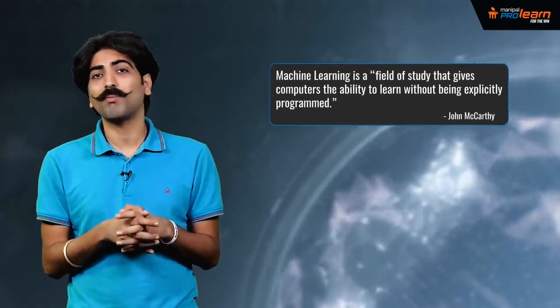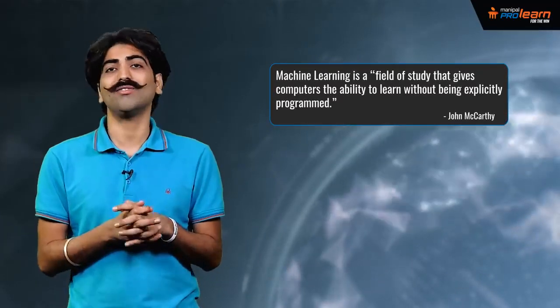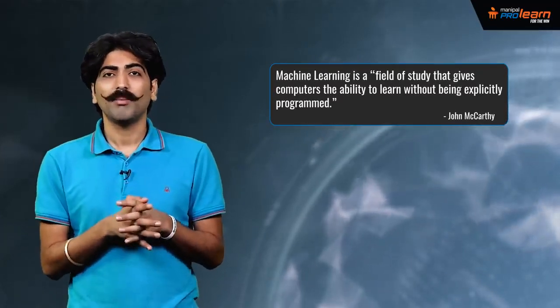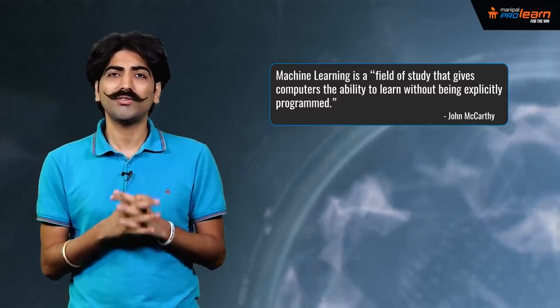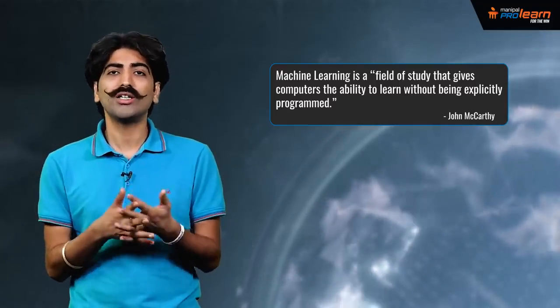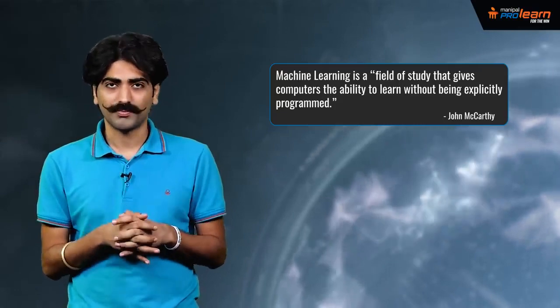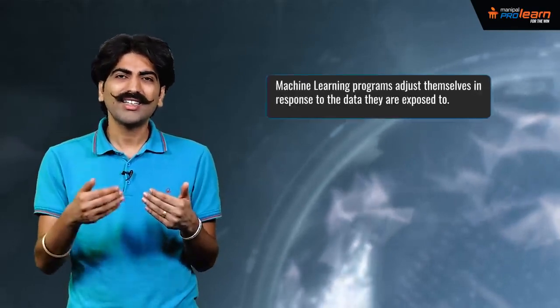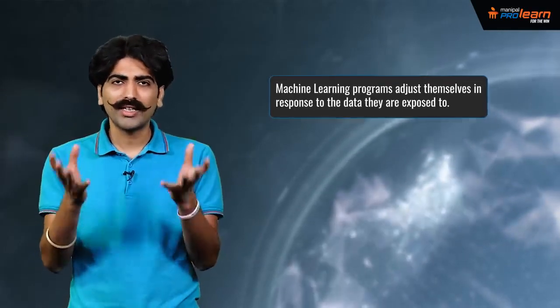Arthur Samuel, again one of the pioneers of the machine learning field, in 1959 defined machine learning is a field of study that gives computers the ability to learn without being explicitly programmed. That means, machine learning programs have not been explicitly entered into a computer, like the if-then statements. Machine learning programs, in a sense, adjust themselves in response to the data they are exposed to.